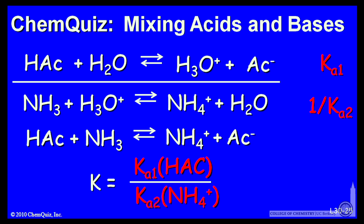I get HAC plus NH3 goes to NH4 plus and AC minus. The relative K is the product of these two Ks, so Ka1 over Ka2. And it's the K for acetic acid, 1.8 times 10 to the minus 5. The Ka for NH4 plus,